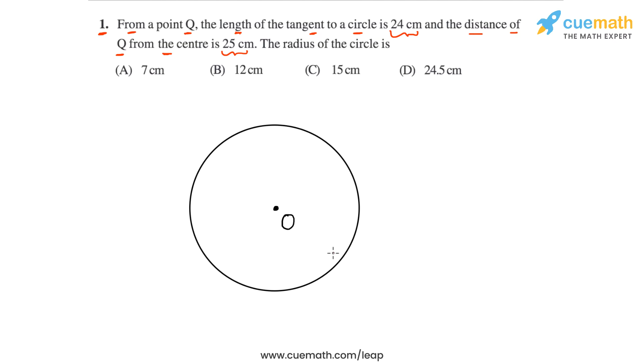So here's a circle with center O that we will use to draw our figure. We have to take a point Q which is outside this circle because we have to draw the tangent from Q. So let's say that Q is this point here and through Q now let us draw a tangent to this circle like this.